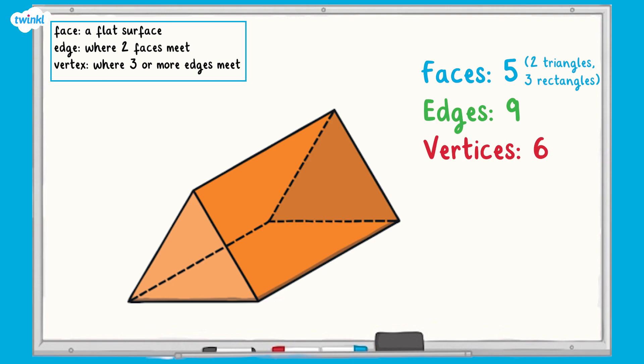To count the faces on the triangular prism, we'll start with the opposite faces again, beginning with the one that we can see. One, two. Next, we'll move on to the rectangular faces. Again, beginning with the one that we can see. Three, four, five.